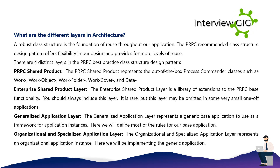What are the different layers in architecture? A robust class structure is the foundation of reuse throughout our application. The PRPC recommended class structure design pattern offers flexibility in design and provides for more levels of reuse. There are four distinct layers in the PRPC best practice class structure design pattern. The first is the PRPC shared product, which represents the out-of-the-box Process Commander classes such as work, work object, work folder, work cover, and data.